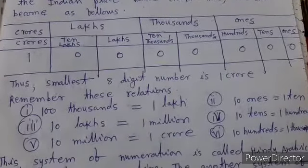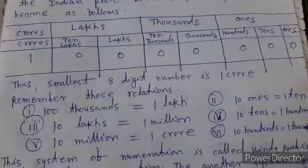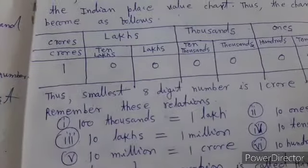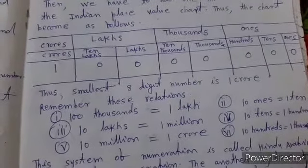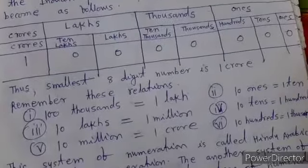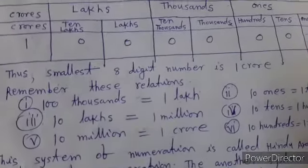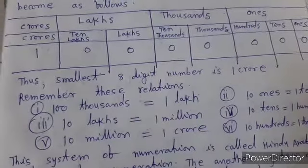The places are of crore. Crore has 2 places, 10 crore and 1 crore. Lakhs have 2 places, 10 lakhs and 1 lakh.